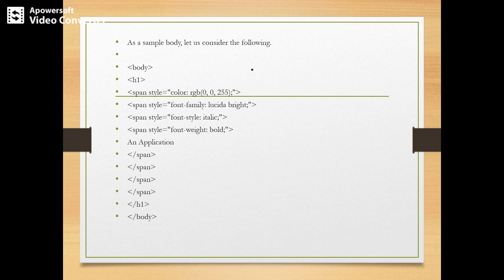The remaining two values, R and G, are zeros, so the color is blue. Next, span style equal to font-family — Lucida Bright, or Times New Roman, or any font can be taken. Then span style font-style equal to italic. And the third one is span style equal to font-weight, which can be set to bold or underline.